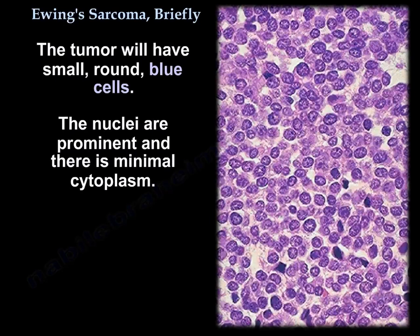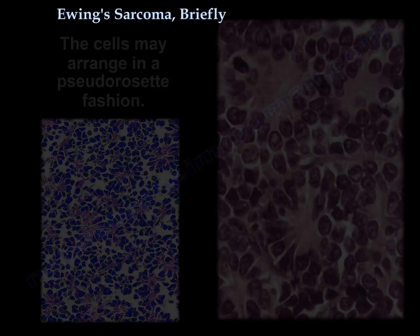The tumor will have small round blue cells. The nuclei are prominent and there is minimal cytoplasm. The cells may arrange in a pseudo-rosette fashion.